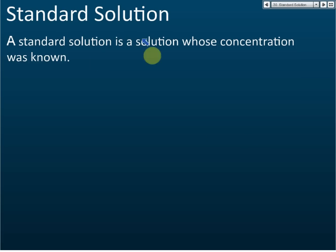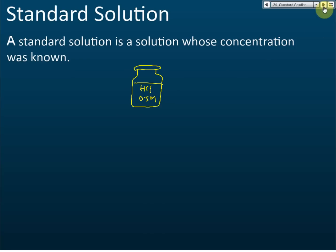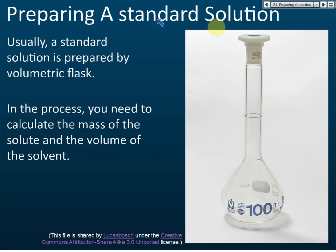A standard solution is a solution where the concentration is known. If you see a bottle labeled HCl 0.5 M, that is a standard solution. If it is just labeled HCl with no concentration given, then it is not a standard solution. So a standard solution is simply a solution where the concentration is known.